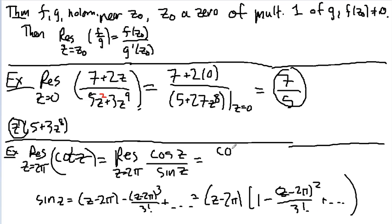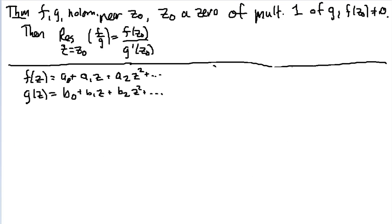So, this is equal to cosine 2π over the derivative of sine, which is cosine, and I plug in 2π there. So that's equal to 1. So, we're done. Alright, so I just quickly wrote down some stuff, and now I'm going to run through the proof of this. So, I have two holomorphic functions near z naught. Let's just assume that z naught is equal to 0 for convenience.